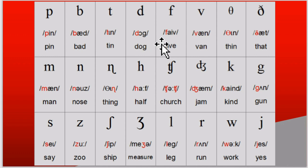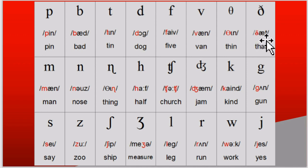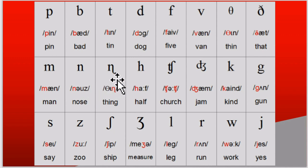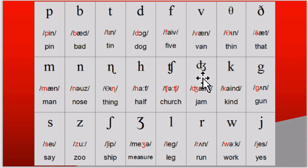F as in five, V as in van, th as in thin, the voiced th as in that, M as in man, N as in nose, and the ng sound as in thing.